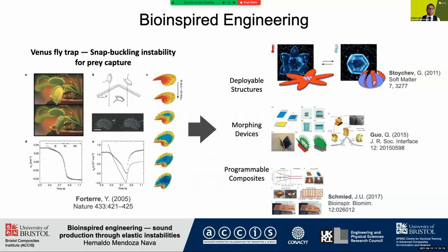Nature can serve as a source of inspiration that could potentially enable innovative functionalities in existing engineering applications. For example, the geometrical and pre-stress conditions of a Venus flytrap enable the existence of multiple states of stability and, upon a trigger condition, a snap buckling instability causes the rapid closure of its leaves allowing it to capture its prey. This biological mechanism has inspired the development of deployable structures and morphing devices, among other applications.